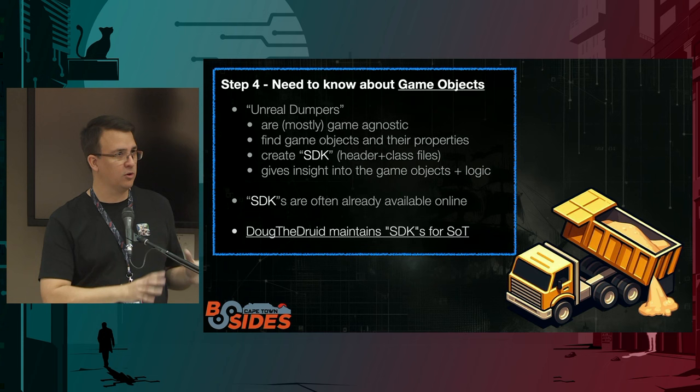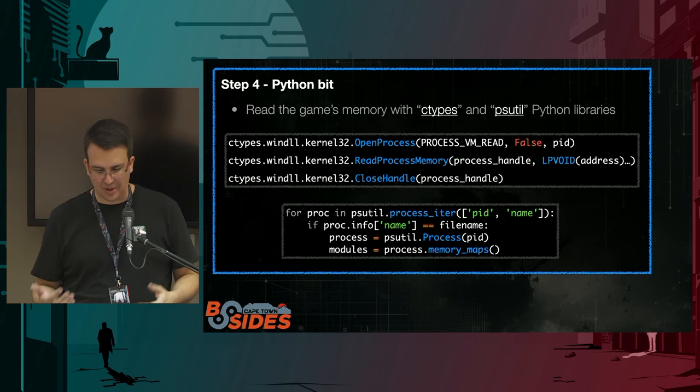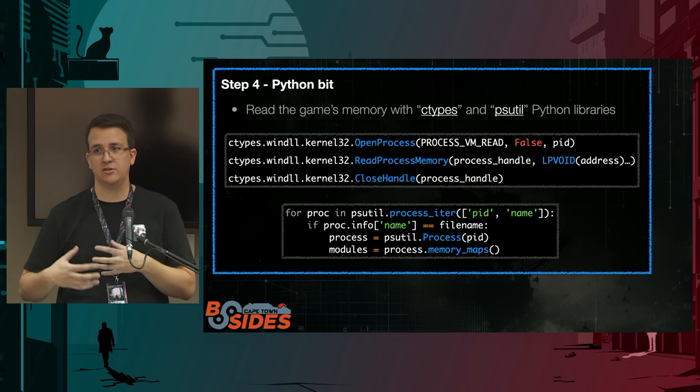Just a little bit deeper than that is Python actually doing things. It uses ctypes, and you can use a library called psutil — this is the part that actually lets you get access to the process, read its memory, get various offsets, and that's what makes it all happen.